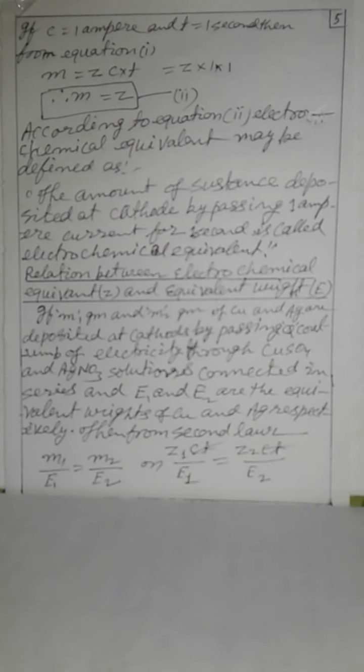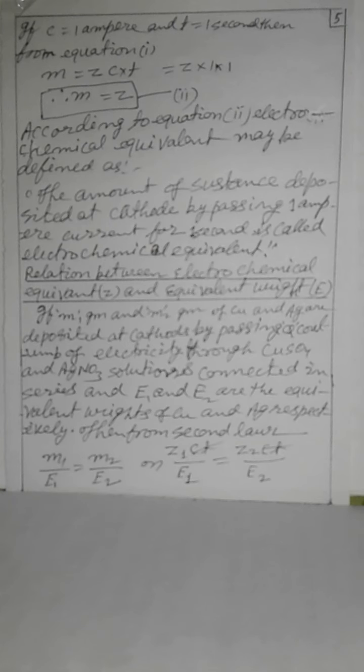Electrochemical Equivalent: From Faraday's First Law, M equals ZCT. If C equals 1 ampere and t equals 1 second, then from Equation 1: M equals Z into 1 into 1, therefore M equals Z — Equation 2. According to Equation 2, electrochemical equivalent may be defined as the amount of substance deposited at cathode by passing 1 ampere of current for 1 second, and is called the electrochemical equivalent.